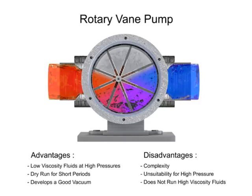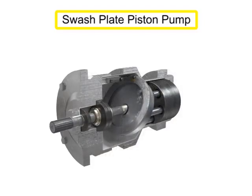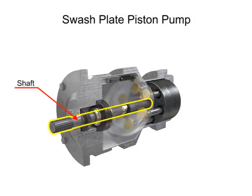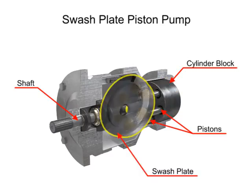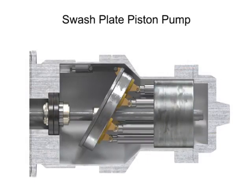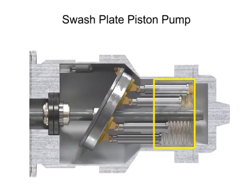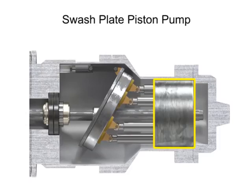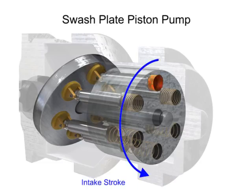Piston pumps come in many different forms. A swash plate is a device used to translate the motion of a rotating shaft into the reciprocating motion of a piston. Swash plate piston pumps have a rotating shaft connected to a cylinder block containing pistons, which are pressed against a stationary swash plate that sits at an angle to the cylinder. As the shaft rotates, the pistons move against the swash plate, causing them to reciprocate within the piston block. The pistons create a vacuum that forces fluid in during half a revolution and expels fluid during the other half.